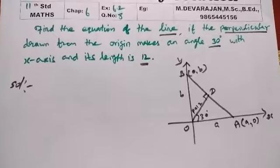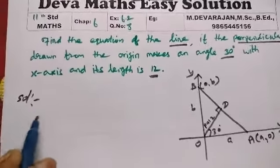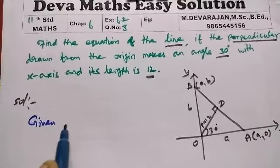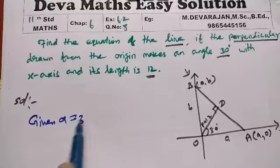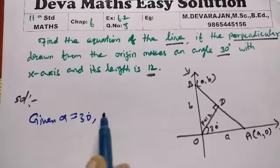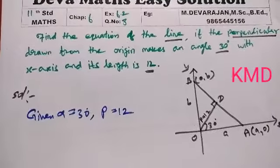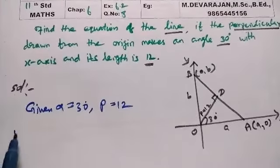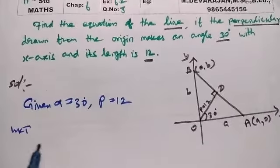Given: α = 30 degrees, normal length P = 12. We'll use the normal form of the line equation.